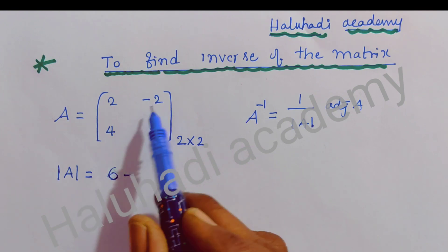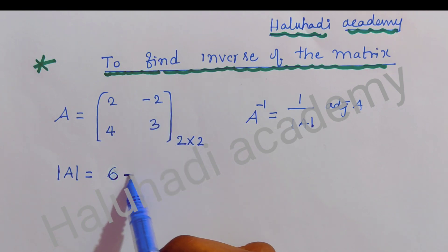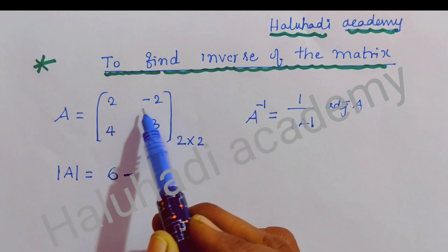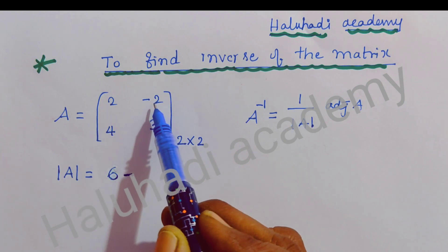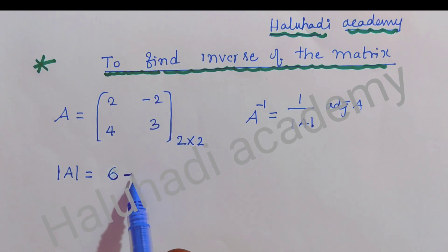Minus 4 into -2, it is -8. Then we are multiplying remaining elements: 4 into -2 is -8. This minus and this minus will become plus. 4 into 2 is 8, and 8 plus 6 is 14. This is determinant A.